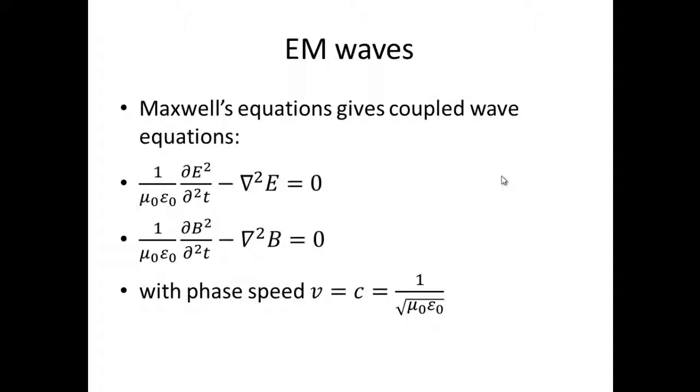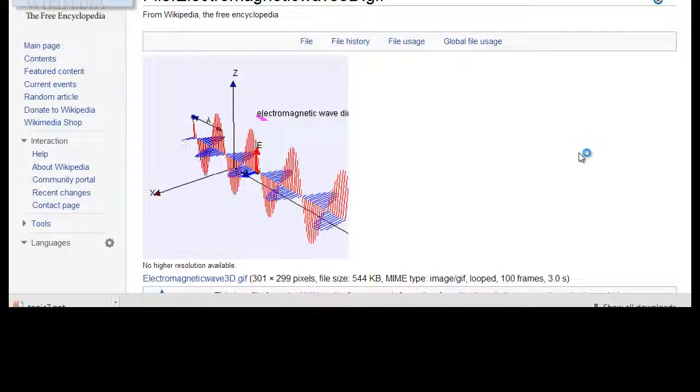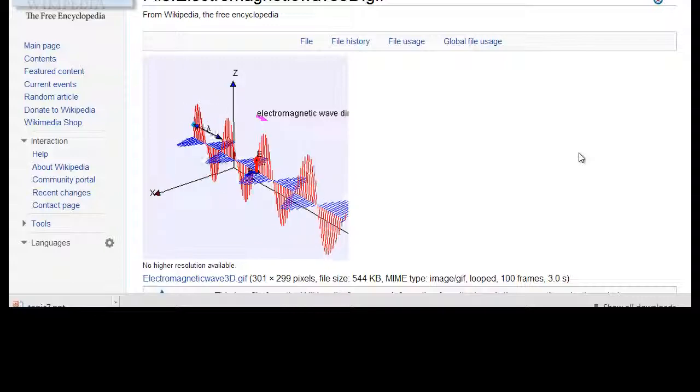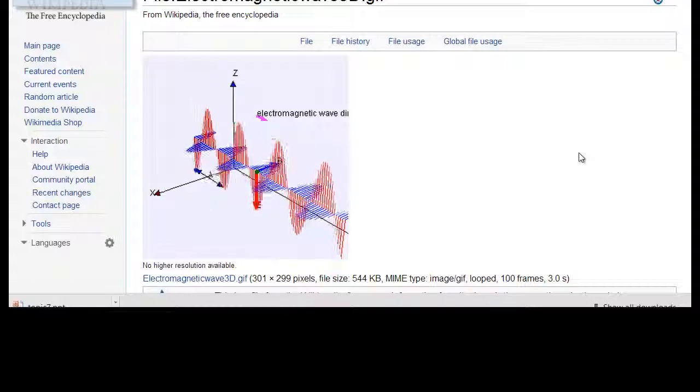So the most common solution we'll look at has the shape as illustrated here. You'll see that the electric field and the magnetic field are both perpendicular to the direction of propagation as well as perpendicular to each other.